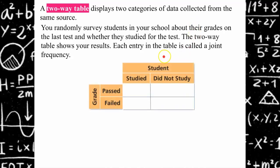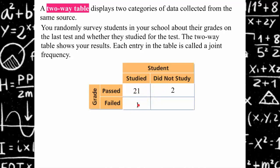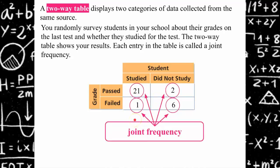Each entry in this table is going to be referred to as a joint frequency. Our rows are whether students passed or failed; our columns are whether they studied or did not study. So 21 students passed and studied. Two students passed and did not study. One student failed and studied, and six students failed and did not study. These are joint frequencies because when you describe the value you must state two different variables — passed and studied.